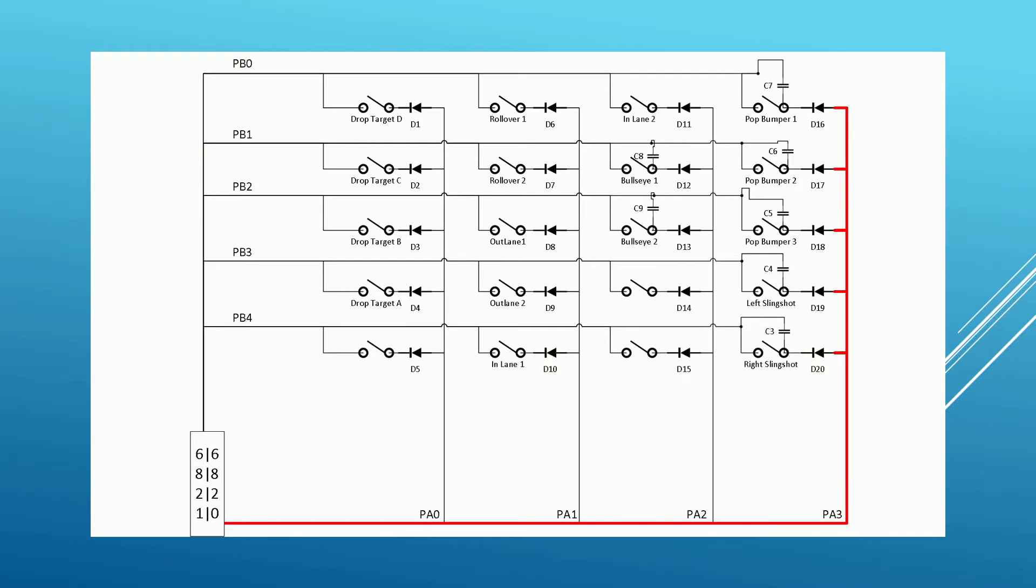Now let's slow this down so we can see what's happening. In this case, drop target C has been hit, and that switch is now closed. When the PIA sends out a pulse on PA0, one of its pins, it gets a pulse back on PB1. This tells it that drop target C has dropped, and can then send an interrupt to the CPU to handle the scoring of this event.